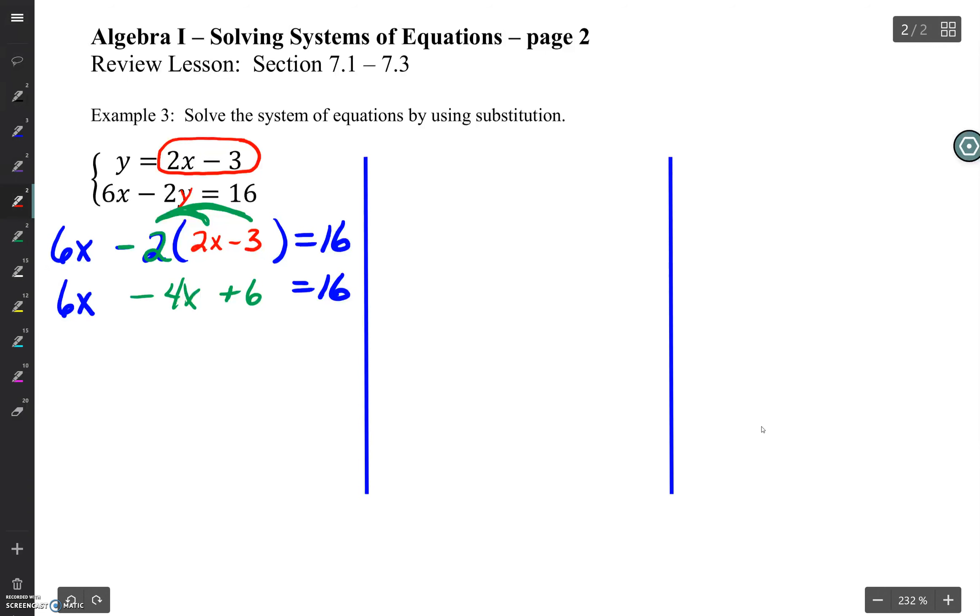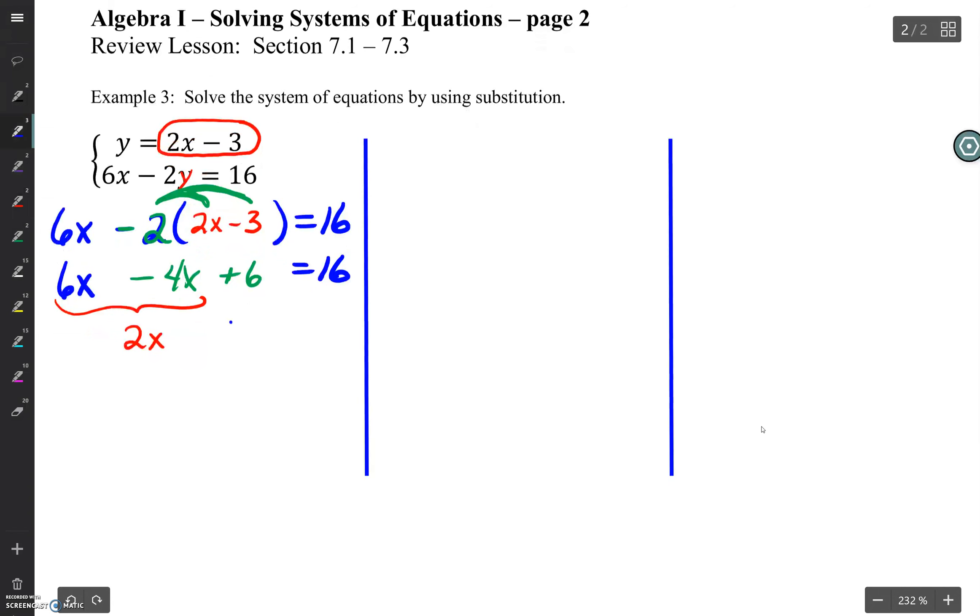Let's combine some like terms here on this next section. 6x minus 4x is 2x, and then we're still left with the plus 6 equals 16.